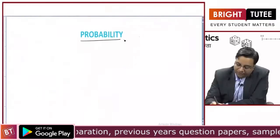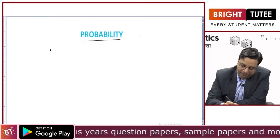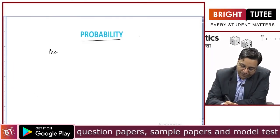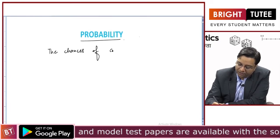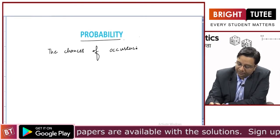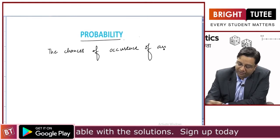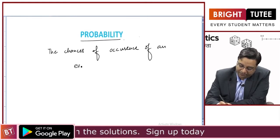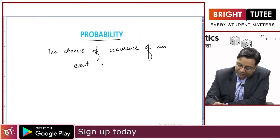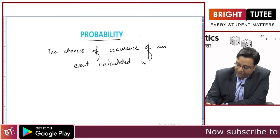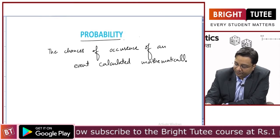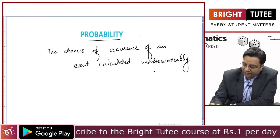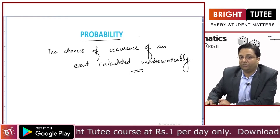So the chances of occurrence of an event, calculated mathematically, is the probability.